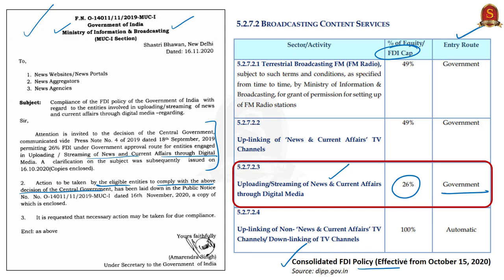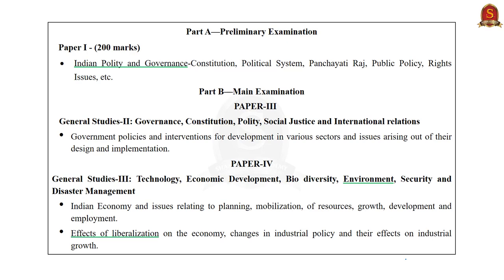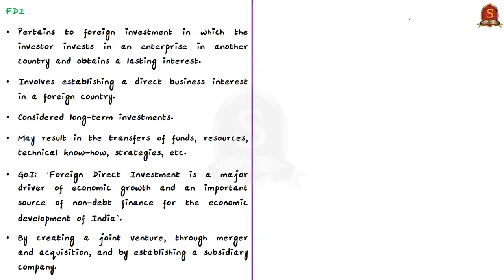In this context, let us see some important differences between foreign direct investment and foreign portfolio investment. Both FDI and FPI are important routes to access foreign capital. Foreign direct investment pertains to foreign investment in which the investor invests in an enterprise in another country and obtains a lasting interest there. FDI involves establishing a direct business interest in a foreign country, such as buying or establishing a manufacturing business, building warehouses or buying buildings. FDI tends to involve a more substantial long-term interest in the economy of a foreign country, and FDIs are considered long-term investments.